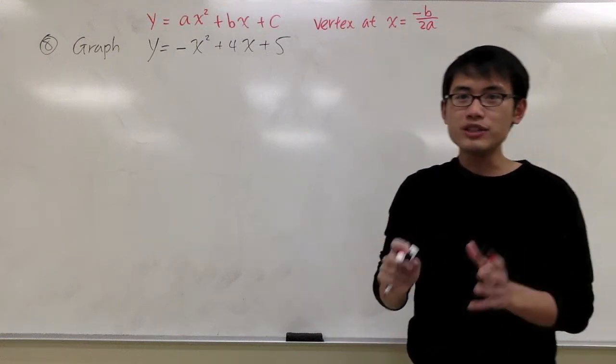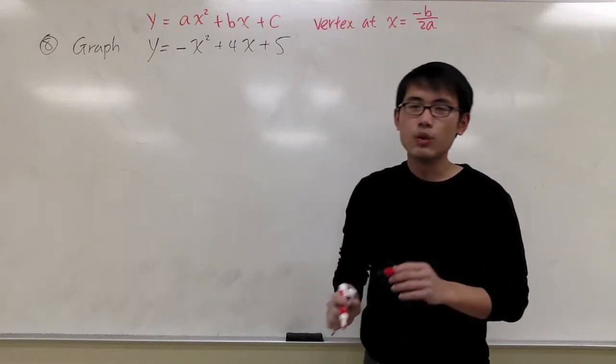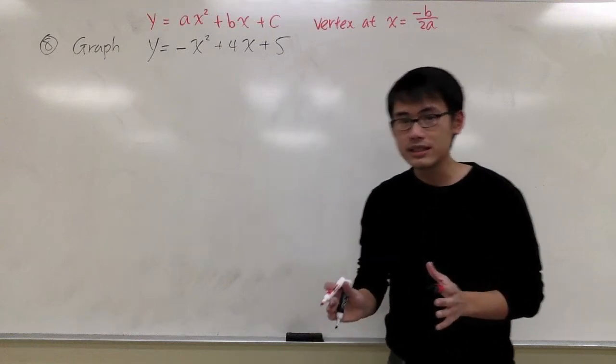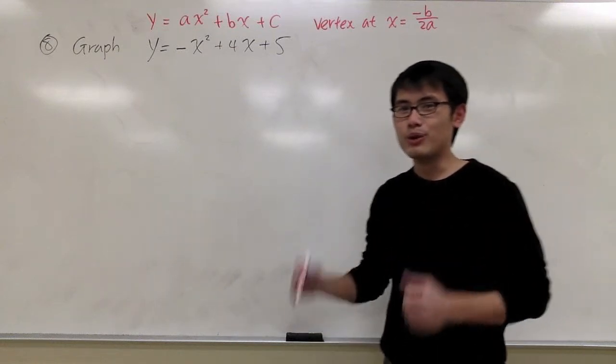The strategy is: once we get the vertex, we are going to create a table of 5 points, and then we can do our graph.